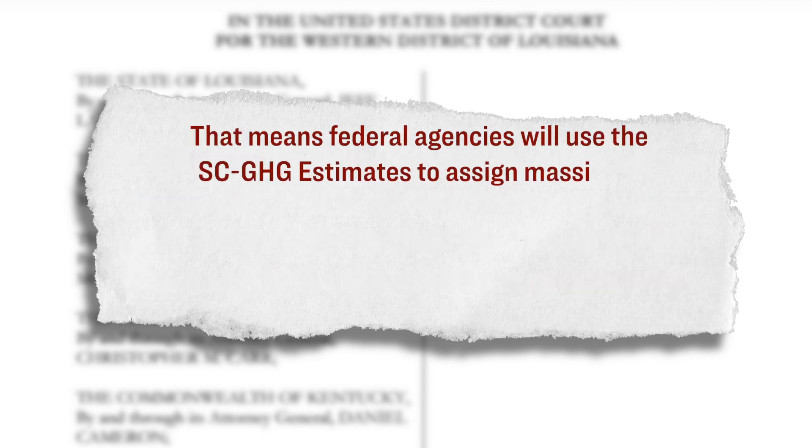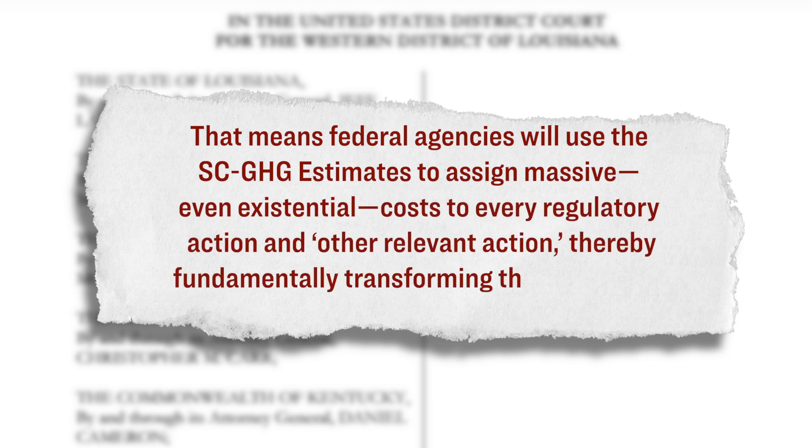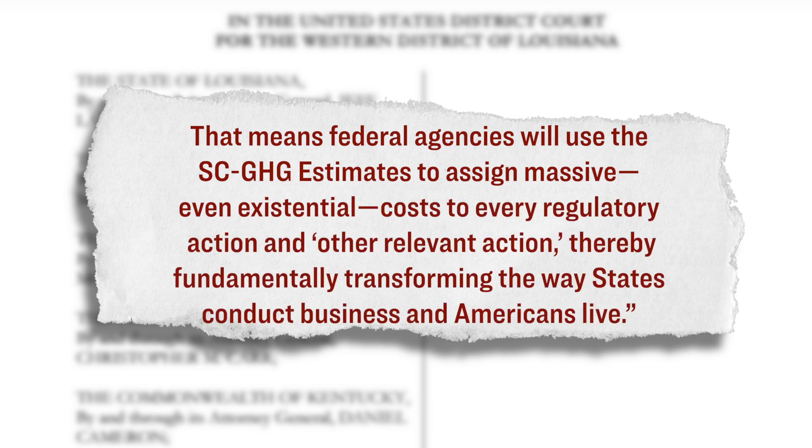Here's what part of that lawsuit said: In other words, federal agencies must now use these estimates to calculate regulatory costs and benefits for virtually everything that states and their citizens encounter every day. That means federal agencies will use these estimates to assign massive, even existential costs to every regulatory action and other relevant action, thereby fundamentally transforming the way states conduct business and Americans live. So these 10 states collectively are asking the court to order federal agencies to not use these estimates, and to declare instead that these estimates are contrary to law, arbitrary and capricious.